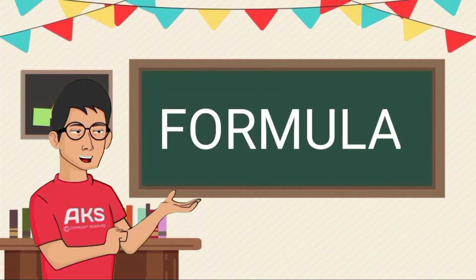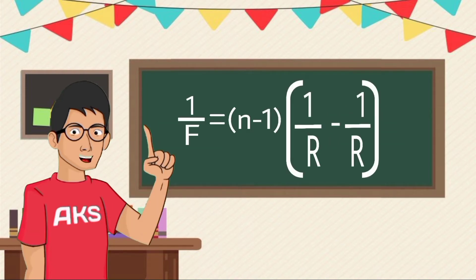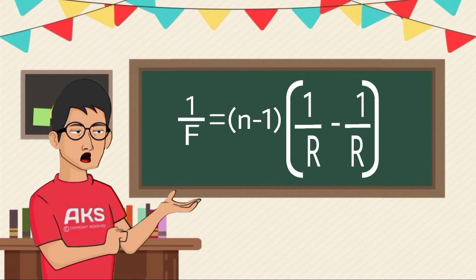Next, coming to the formula of radius of curvature: 1 by f is equal to n minus 1 into 1 by r1 minus 1 by r2.